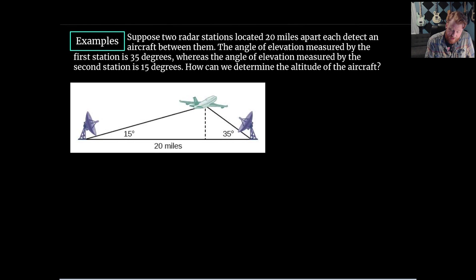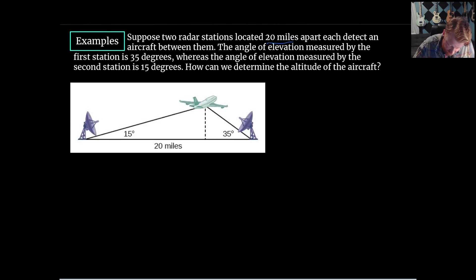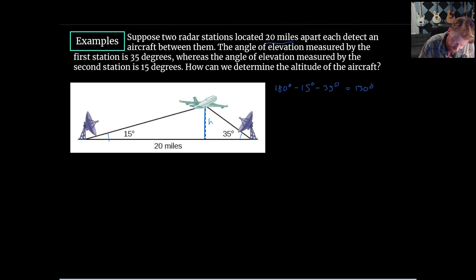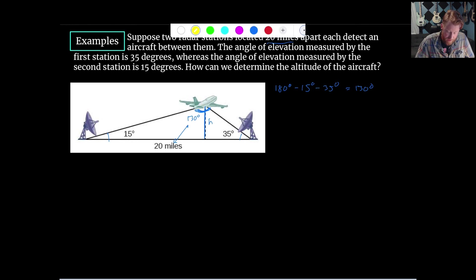Now for an application problem. We're air traffic controllers with two radar stations 20 miles apart that detect an aircraft between them. We know the angles of elevation from each radar to the aircraft — 15° and 35°. We want to find the altitude H of the aircraft. First, we find the third angle of the triangle: 180° − 15° − 35° = 130°. The side opposite this 130° angle is 20 miles.